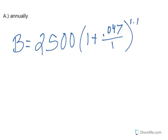And then once a year times how many years, which is just one. So this formula could just be written as one plus .047, and that's it, right? Because your exponent is 1 times 1, which is just 1.